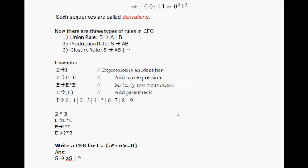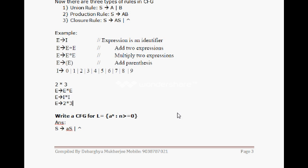In the same fashion, we can generate other languages. For example, to generate a^n, whenever we are making something like a^n or b^n we are going to use a closure rule. So here we are using S as the starting symbol to define, for example, a^2.